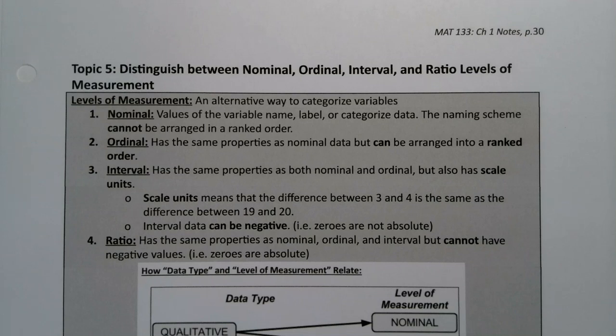There is an alternative way to categorize variables that shows up in nursing textbooks and criminal justice textbooks and various other places. So we want to expose you to these definitions, but we're not going to do too much with them in Math 133. So they're the levels of measurement: nominal, ordinal, interval, and ratio.